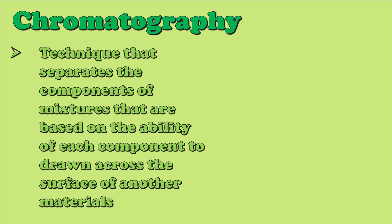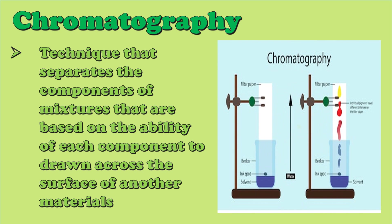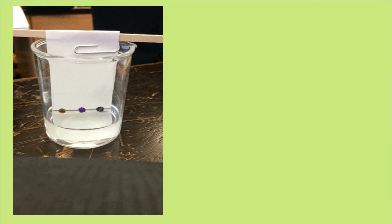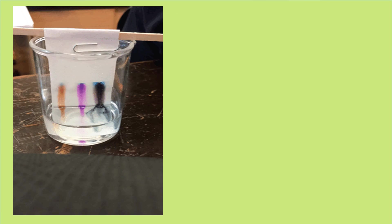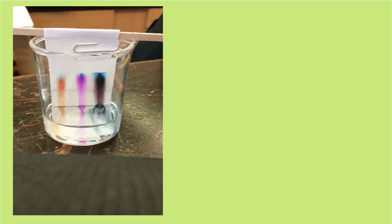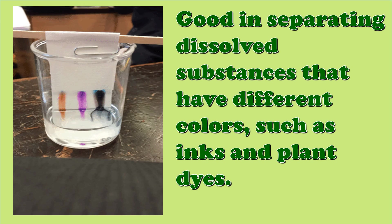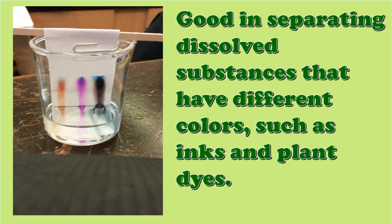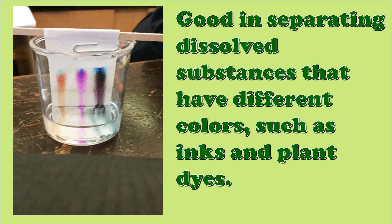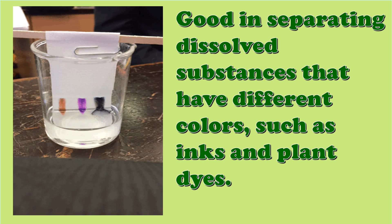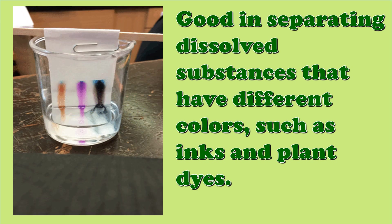The last technique is what we call chromatography. It is a technique that separates the components of a mixture based on the ability of each component to move across a surface of another material. During the separation, the various components spread at different speeds. Chromatography is good in separating dissolved substances that have different colors, such as ink and plant dyes. It works because some colored substances dissolve in liquid better than others, so they travel further up the paper.